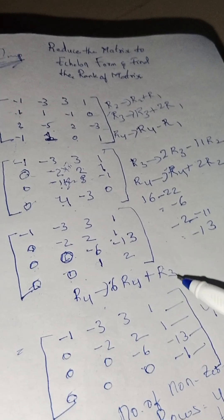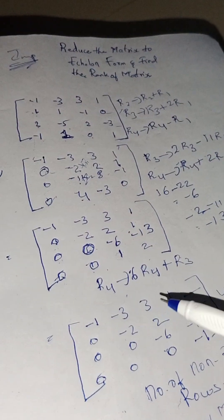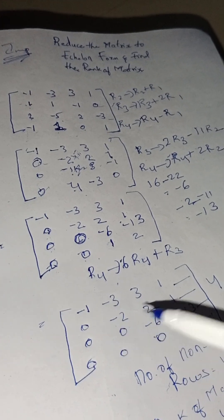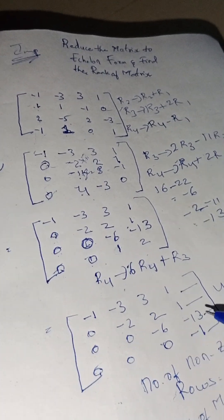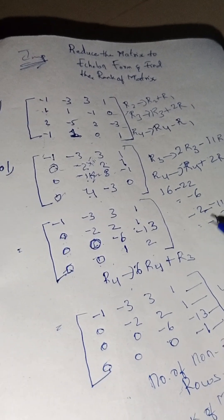6R4 plus R3. After applying this we will be getting the answer as: minus 1, minus 3, 3, 1; 0, minus 2, 2, 1; 0, 0, minus 6, minus 13; 0, 0, 0, minus 1.